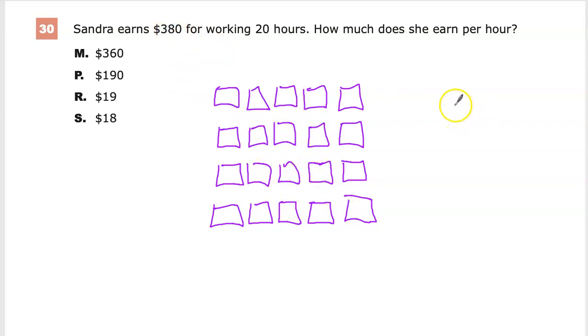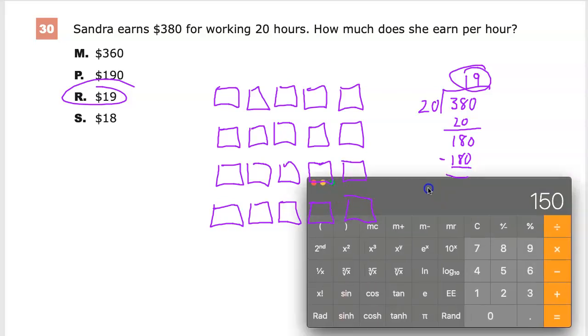So I'm going to divide 380 by 20. Now, if you don't have a calculator, you can do the long division where this would be 1 and then this would be a 9 and it's $19 per hour. So it's R. This is a calculator section or a calculator allowed section. So why wouldn't you use it? 380 divided by 20. 19.